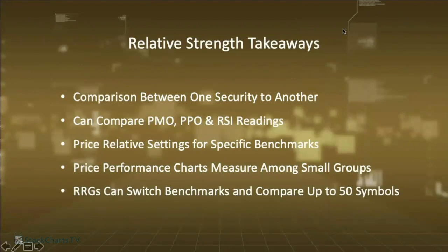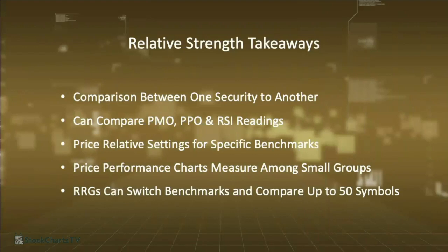Here are the takeaways: relative strength is a comparison between one security and another. The Relative Strength Index is just for that particular security when it's on the chart. You can compare PMO, PPO, and RSI readings among other stocks. The price relative settings let you compare against specific benchmarks. Price performance charts are good for measuring among small groups. RRGs let you use about 50 symbols to compare. And that's all I had for my Relatively Speaking workshop.